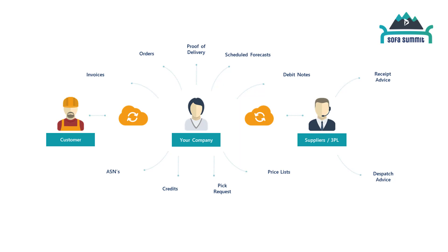That can also include SSCC labeling. SSCC — Serial Shipping Container Codes — provides a unique identifier, typically for a pallet. You ship the message detailing what is on the pallet, its contents, and that might include batch or serial numbering. When your customer receives the goods, they just scan that one barcode on the pallet and they already know what should be on it and will just book it in. Retailers like Tesco want ASNs because it saves them having to add that information along the way.